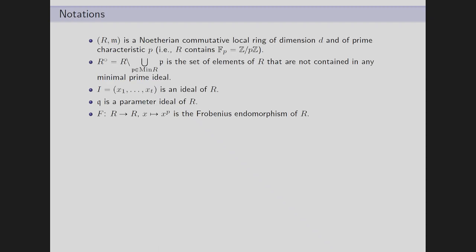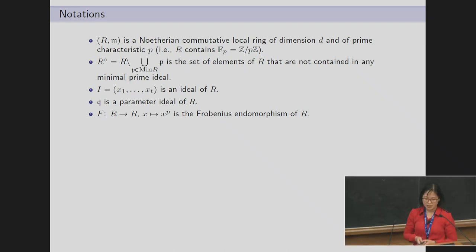Throughout my talk, R is a Noetherian commutative local ring of dimension d and prime characteristic p. R⁰ is the set of elements of R that are not contained in any minimal prime ideal. I is generated by x₁ to xₜ, an ideal of R. Q is a parameter ideal of R, and F is the Frobenius endomorphism of R.